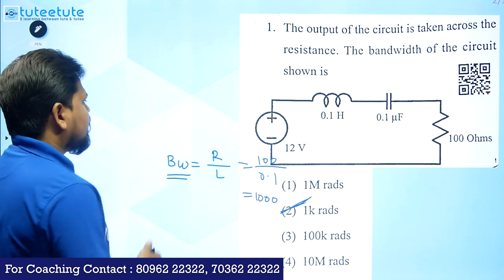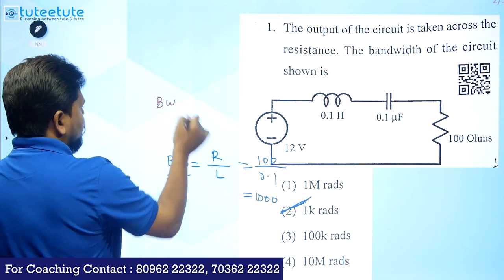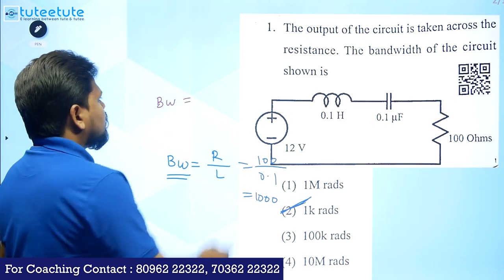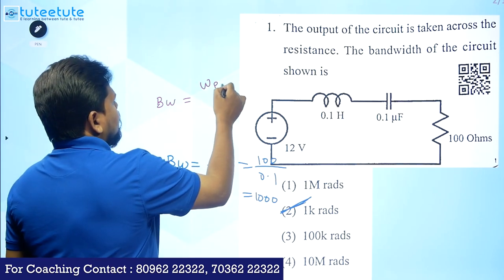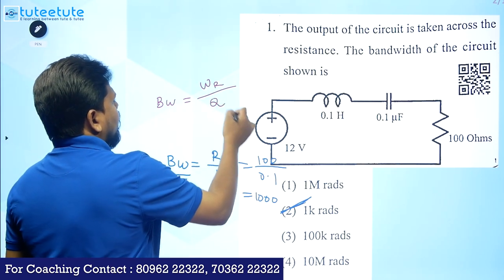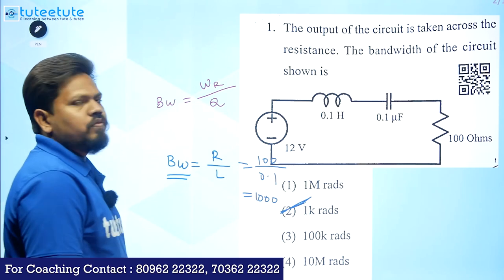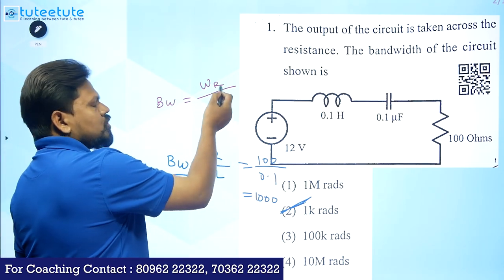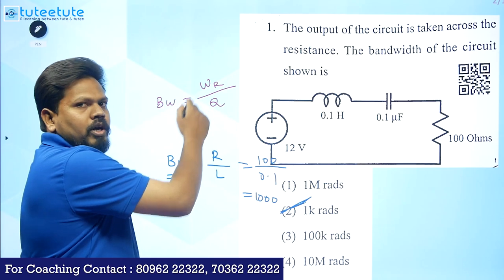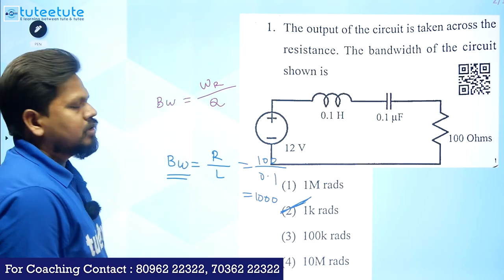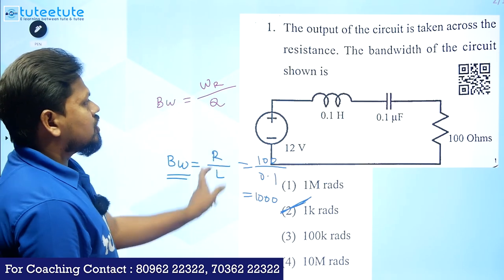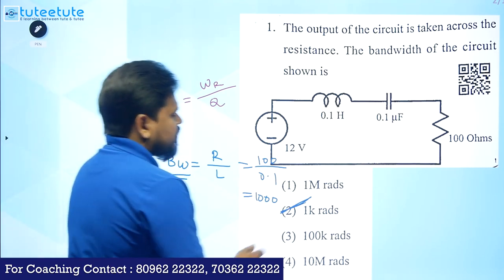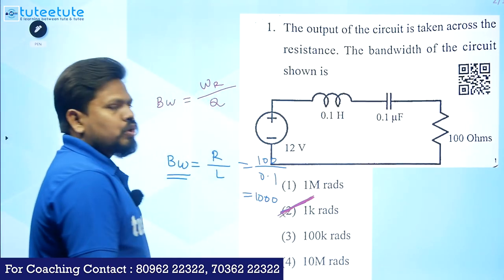Alternatively, bandwidth can be given as resonating frequency divided by Q factor. Q factor is ωL/R, and when you simplify, omega cancels and you get the same equation R/L. This is valid for a series RLC circuit. The answer for this question is option 2.